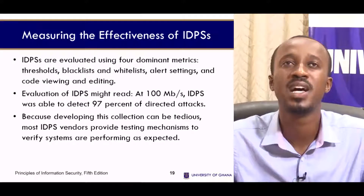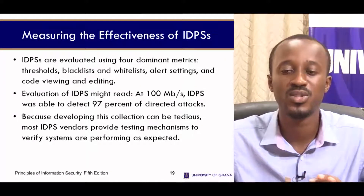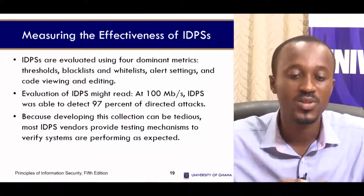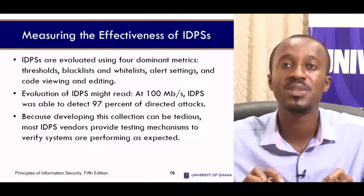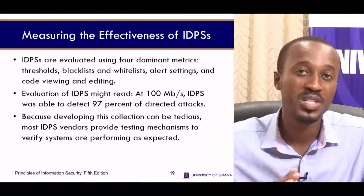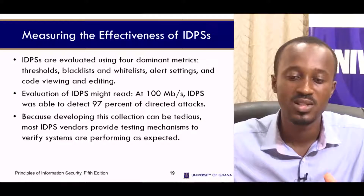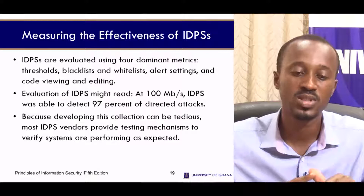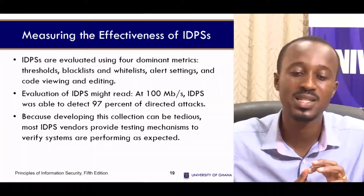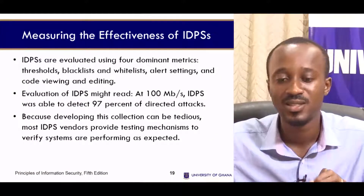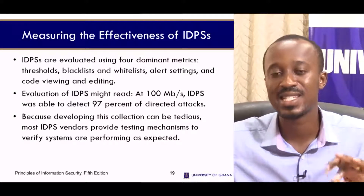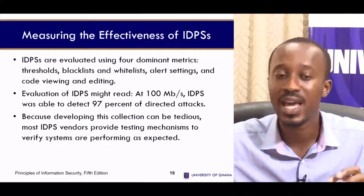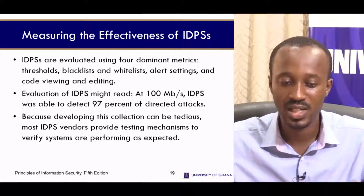Let's look at how to measure the effectiveness of intrusion detection and prevention systems. They are evaluated using four dominant metrics: thresholds, blacklists and whitelists, alert settings, and code viewing and editing.